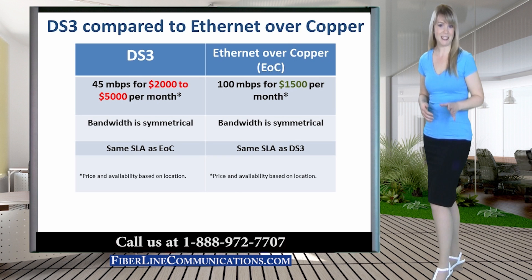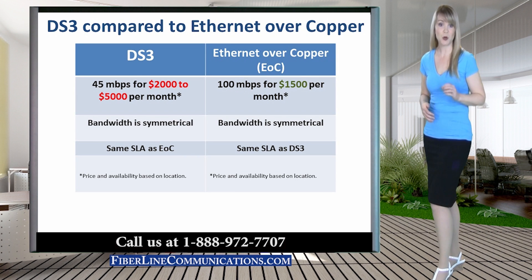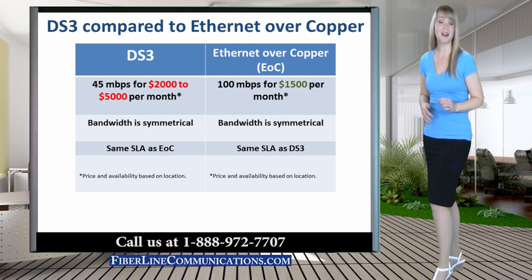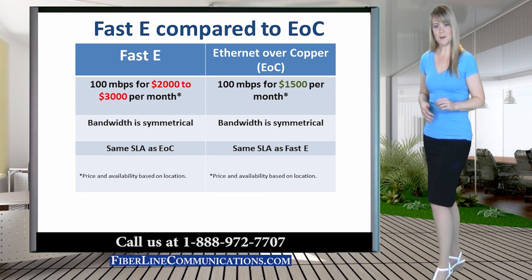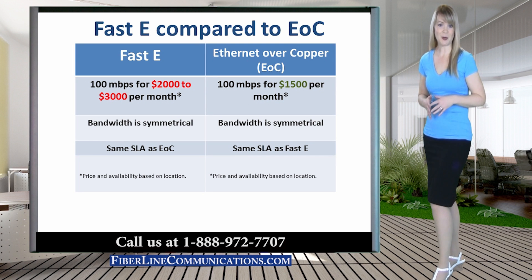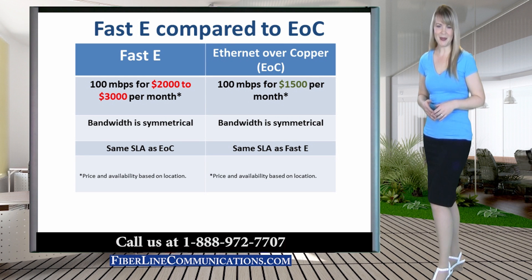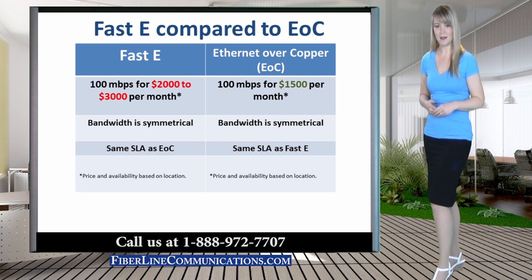This is great news for businesses that are currently paying between $2,000 to $5,000 per month for 45 Mbps DS3. 50 Mbps Ethernet over Copper is commonly available for less than half the price of DS3. For another specific price comparison, a 100 Mbps EOC circuit costs about $1,500 per month, while a 100 Mbps Fast Ethernet circuit costs on average between $2,000 to $3,000 per month.